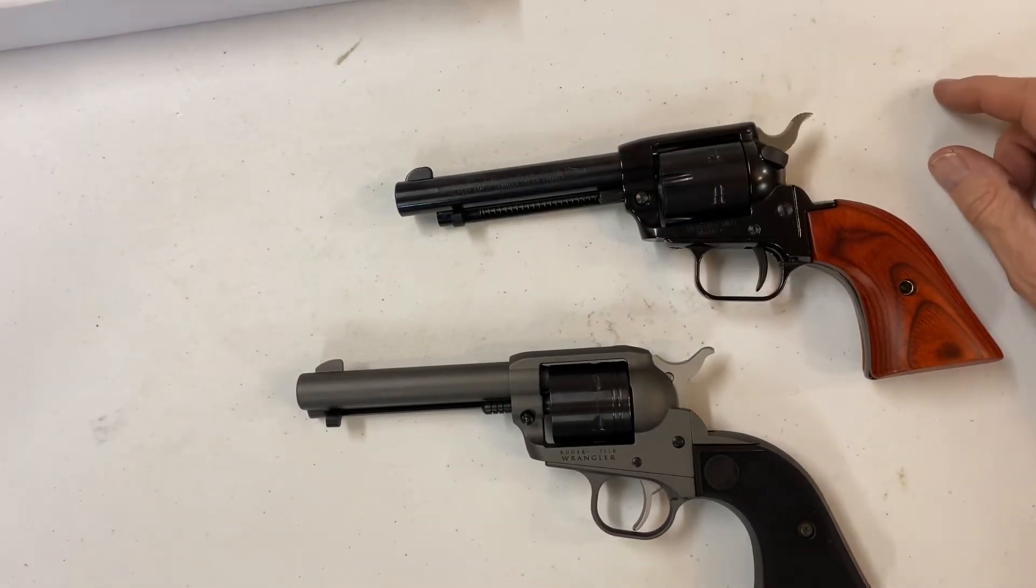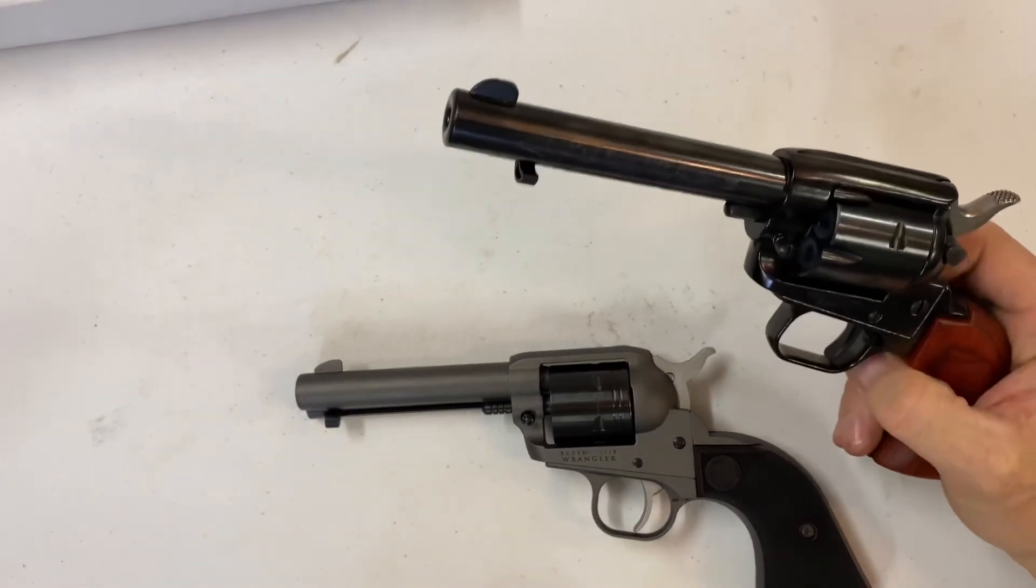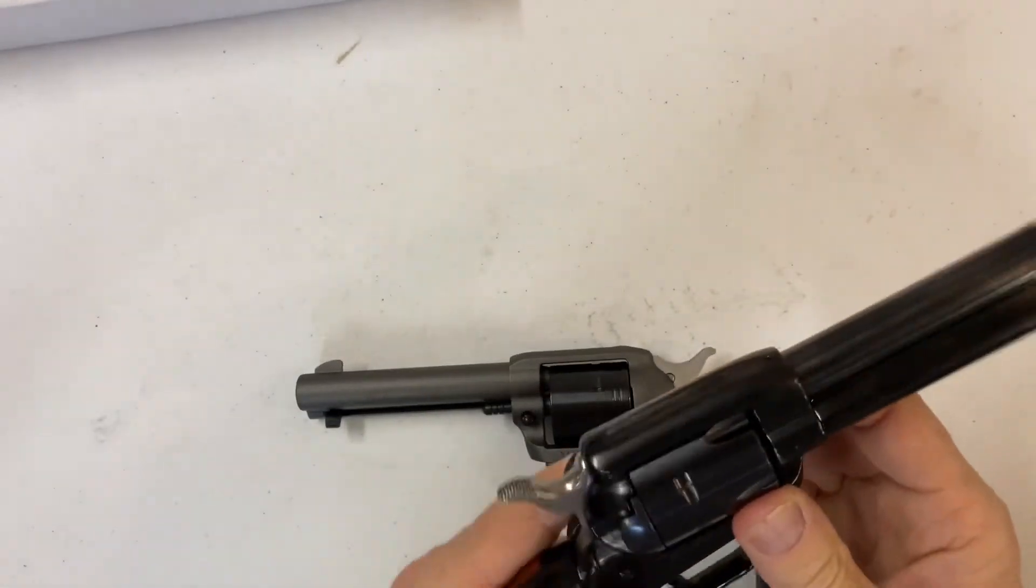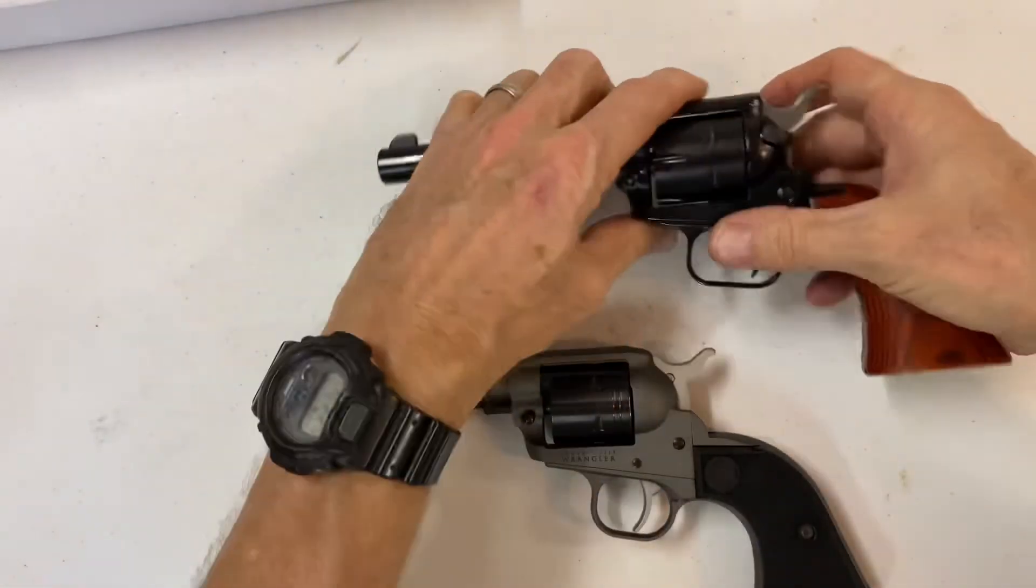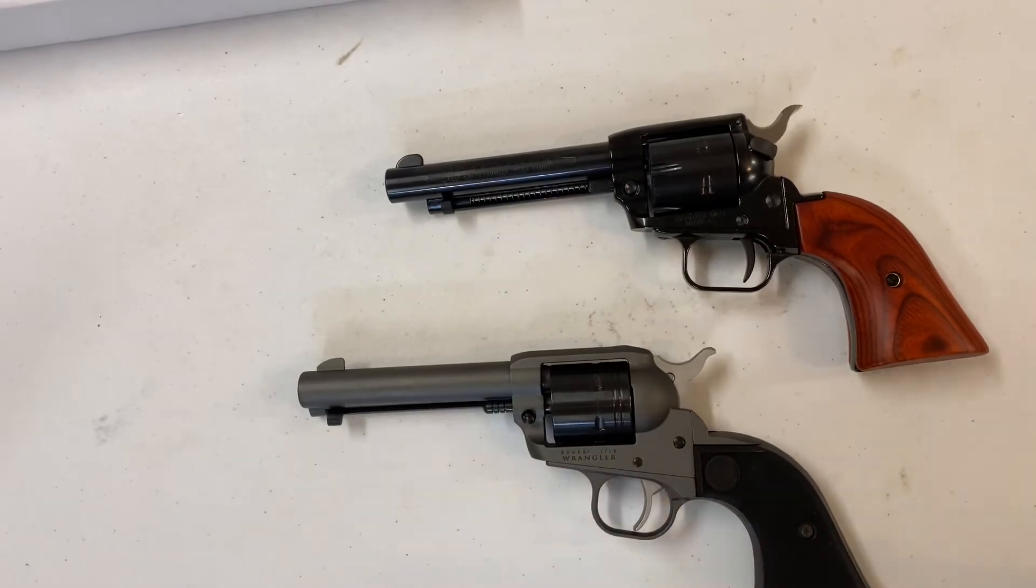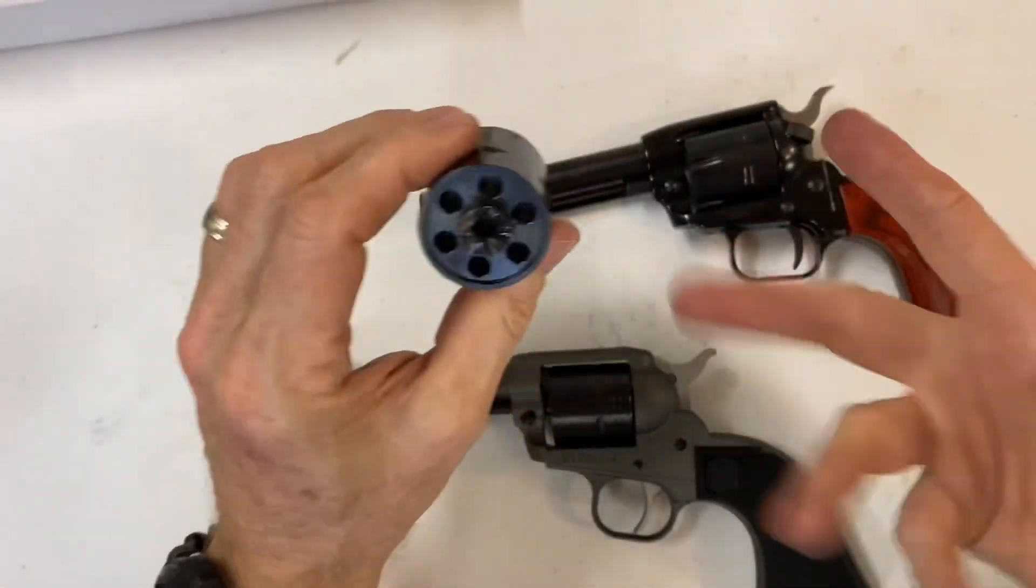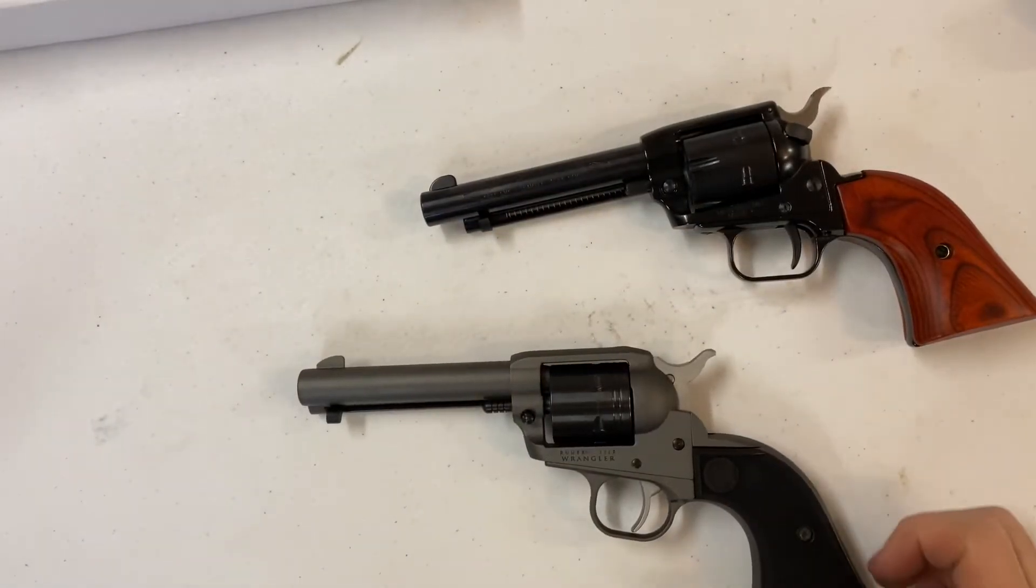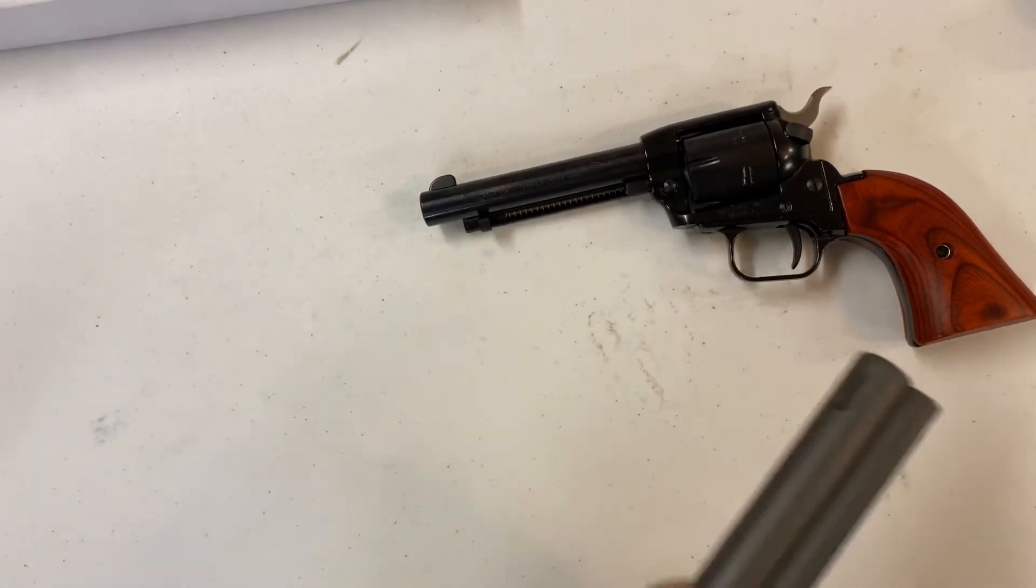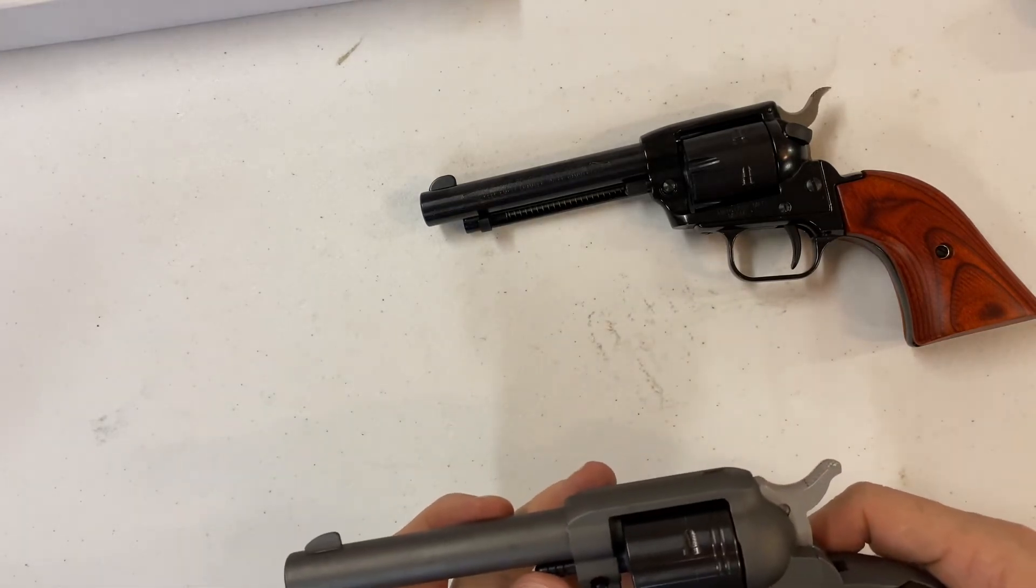Also, what you can do with this gun too is you can run mag loads through this one versus this one. You just have to change the cylinder out. Right here, for like 30 bucks more, I bought this for 30 bucks, and now I can run mags. The Wrangler, you can't. All you can do is you're only going to be running shorts and LR on here.